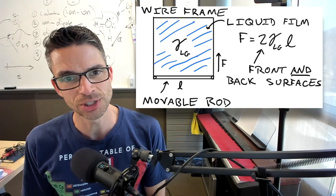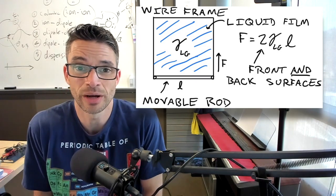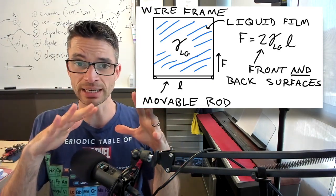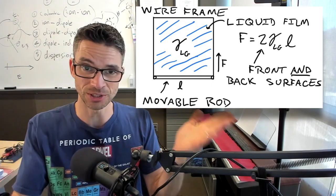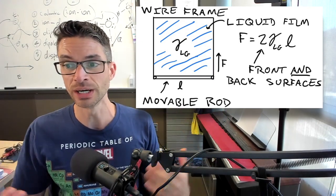Where did that factor of two come from? Well, it's just the way we set this up. There's a surface in the front of the screen and a surface behind the screen. So there are two surfaces and that's where the two comes from.